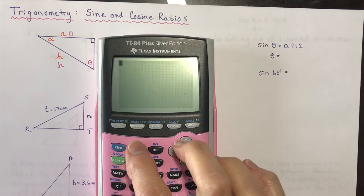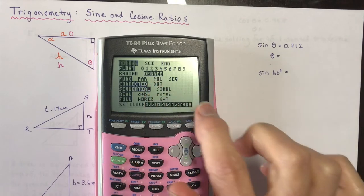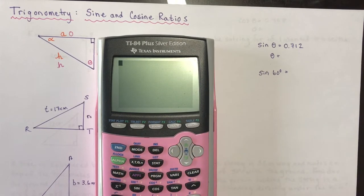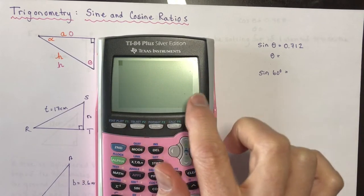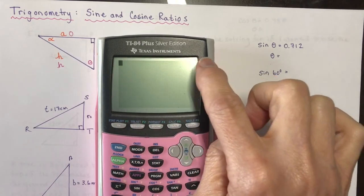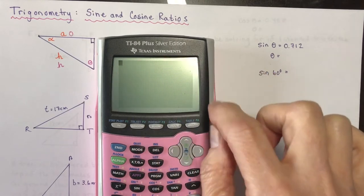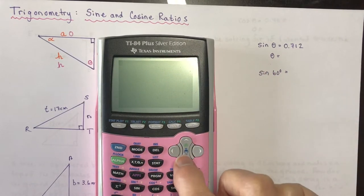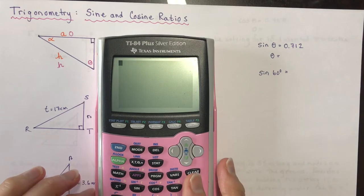On a fancy calculator, you'll see degrees highlighted. There is another way to measure angles called radians, which you'll use in grade 12. On a more basic scientific calculator, it should say 'deg' across the top. You can change it using a special button — they're all different, so check your manual if you need to.